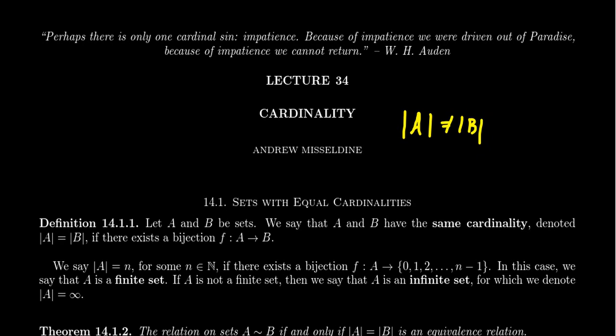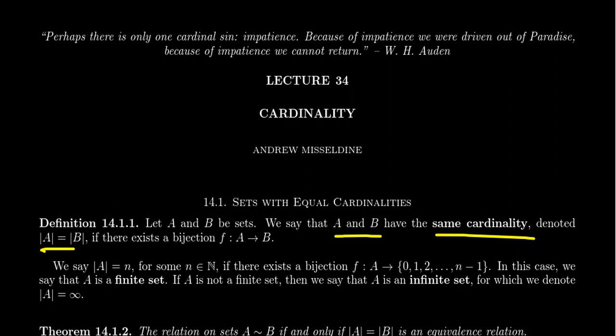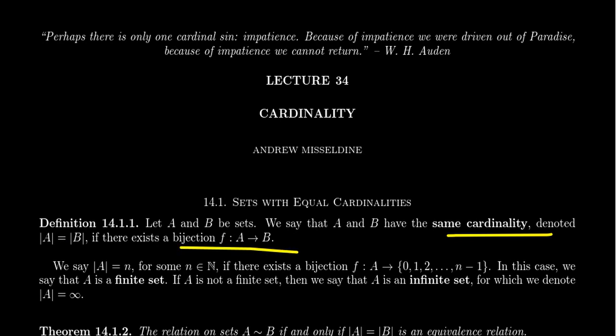The short answer is yes, but we cannot explain why that is until we have a proper definition of cardinality, as the current notion we've been using has actually been insufficient. So that leads to our first definition. Suppose we have two sets A and B. We say that A and B have the same cardinality, denoted the cardinality of A equals the cardinality of B, if there exists a bijection F that maps from A to B. We've defined same cardinality exactly when a bijection exists — so in a sense that does answer the question, but by definition of cardinality.